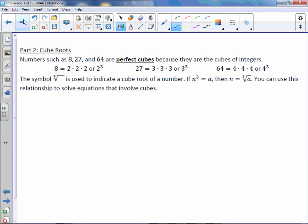Cube roots. Numbers such as 8, 27, and 64 are perfect cubes. Because they are cubes of integers. So for example, 8 is 2 times 2 times 2, or 2 to the third power, 2 cubed. So the cube root of 8 is simply 2. Same thing with 27. 27 is the same thing as 3 cubed. So the cube root of 27 is 3. And 64 is the same thing as 4 cubed. So the cube root of 64 is 4.